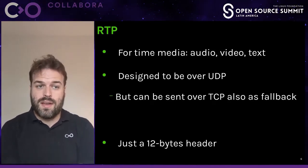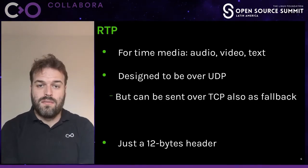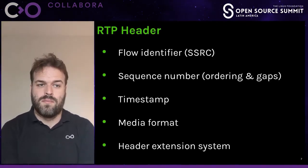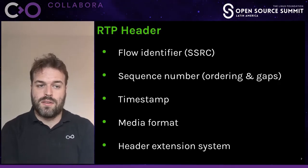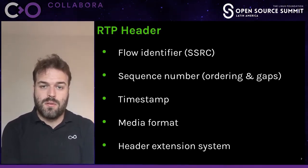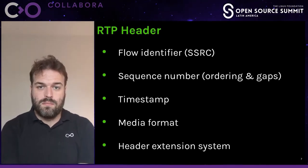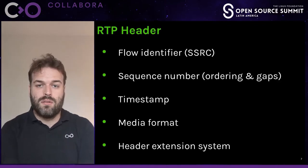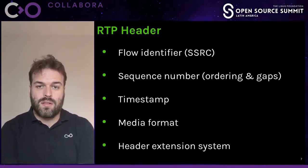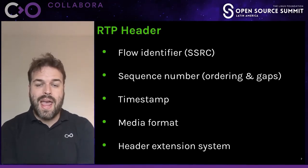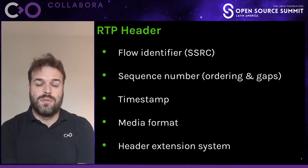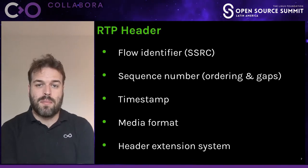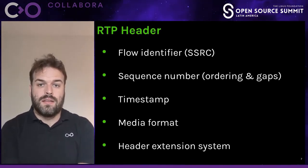This 12-byte header has a couple more information points that the UDP header doesn't contain. First, it contains a flow identifier allowing multiplexing of multiple streams over the same underlying transport. It has a sequence number, so every packet gets a number that the sender puts in sequential order, so that the receiver can put the packets back in the right order — because UDP does not provide ordering — and can know if there was a gap, meaning if a packet was lost, and take appropriate action. There's also a timestamp so that the receiver can play back the packets in the same time sequence that they were captured.